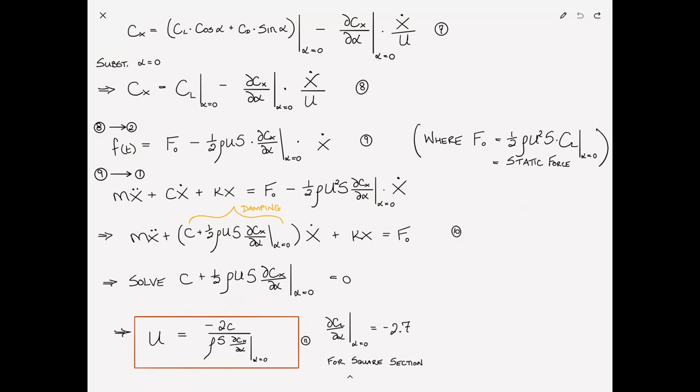So, for that tank, if we have a dCx/dα of -2.7, we now find that we can have a flutter velocity. Flutter can occur on shapes like that.